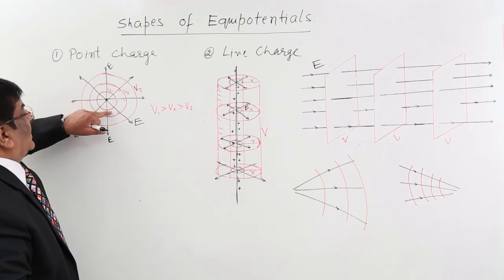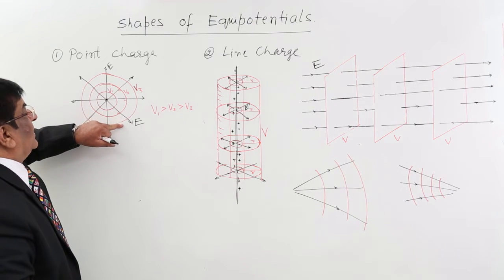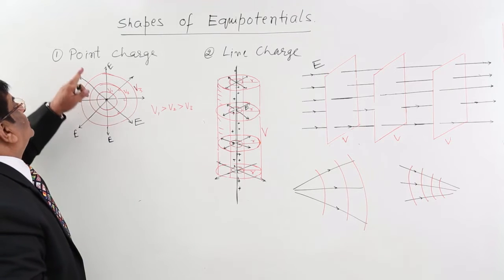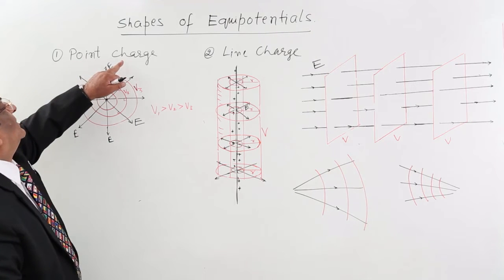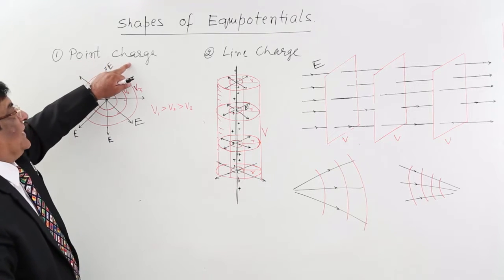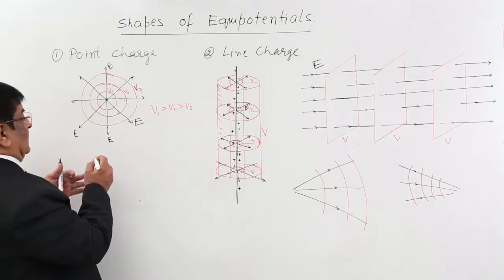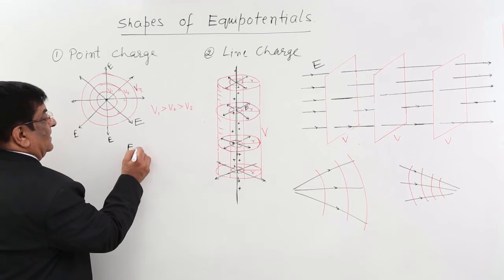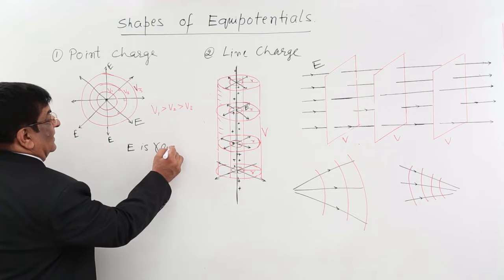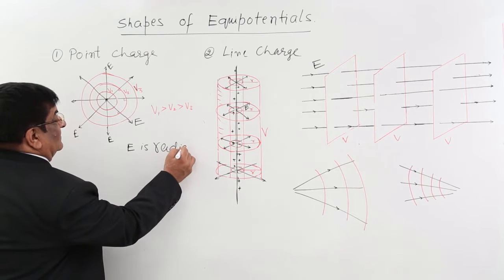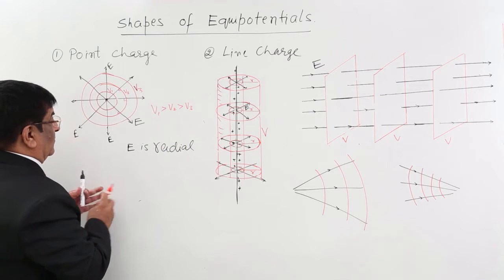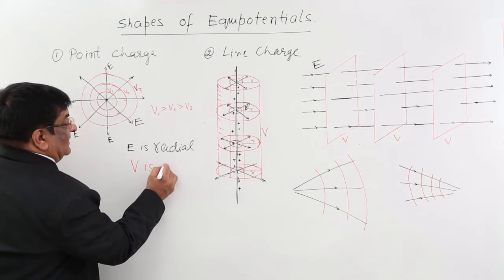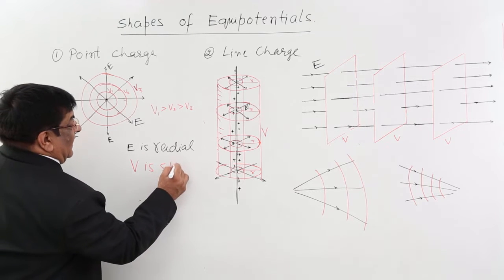It has higher potential closer in, lower potential further out, and the electric field points outward. So if the electric charge is a point charge, then the field E is radial and the equipotential surfaces are spherical.